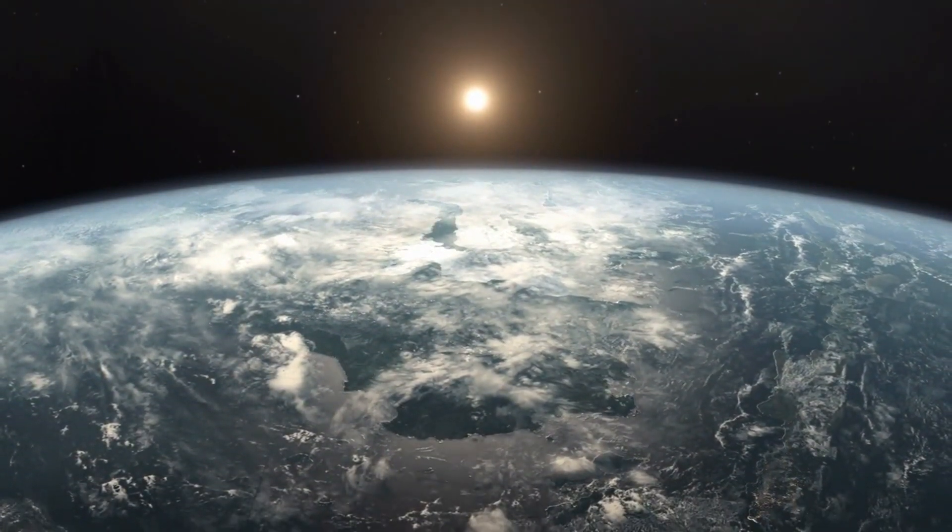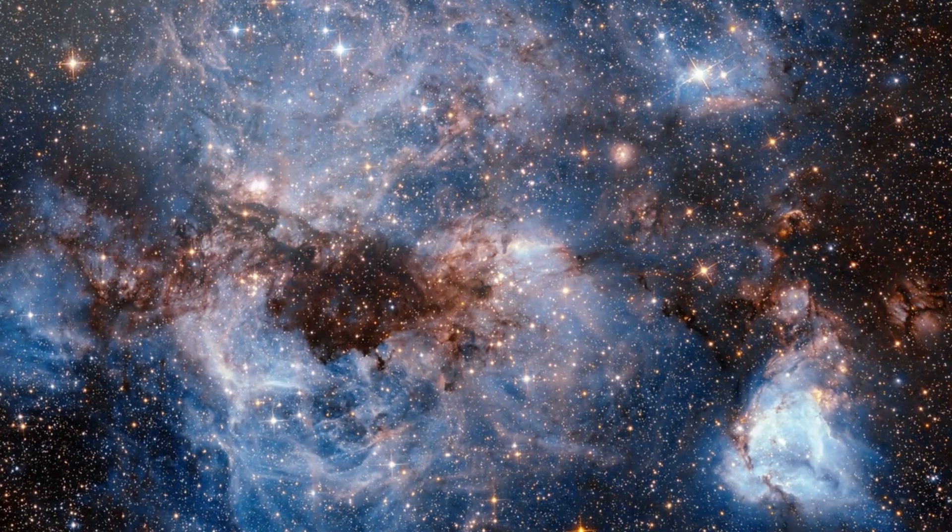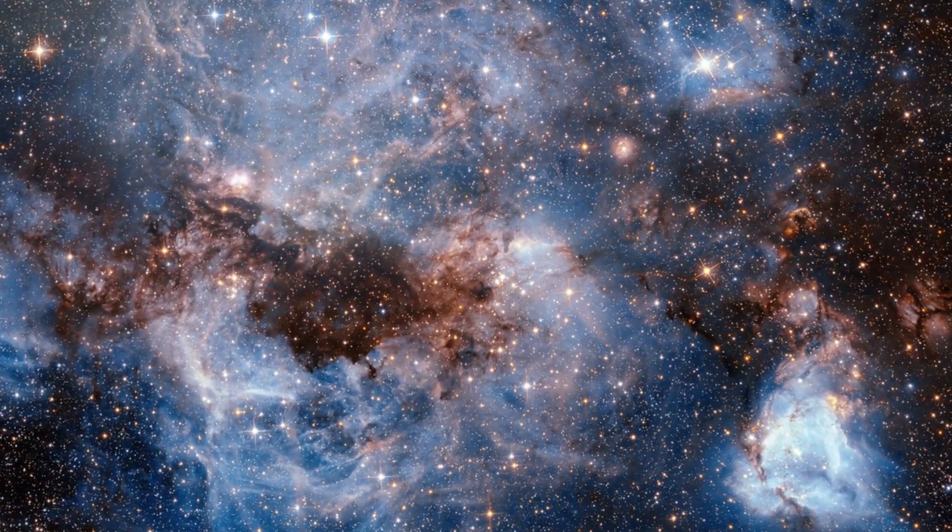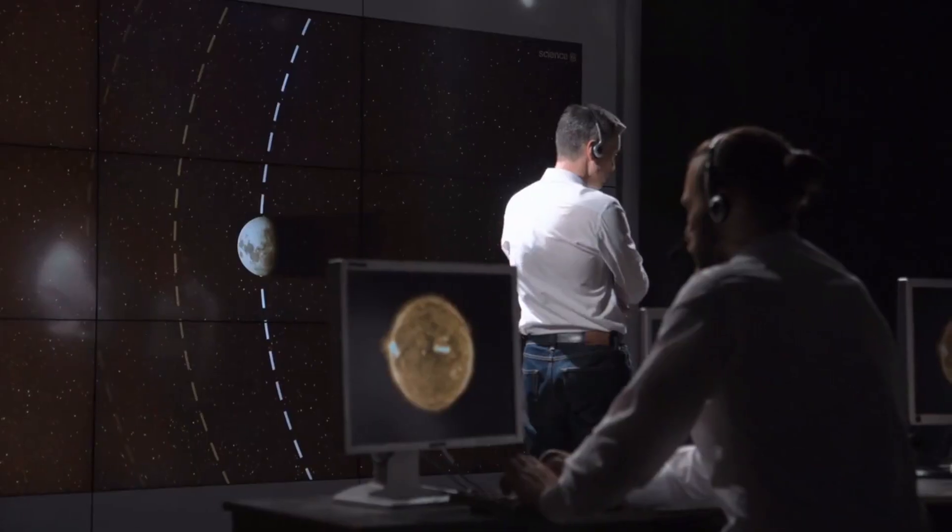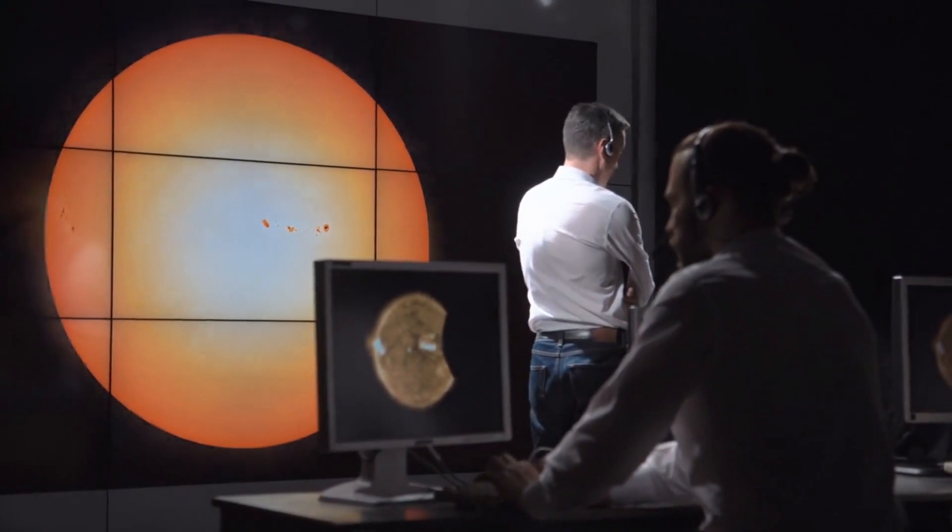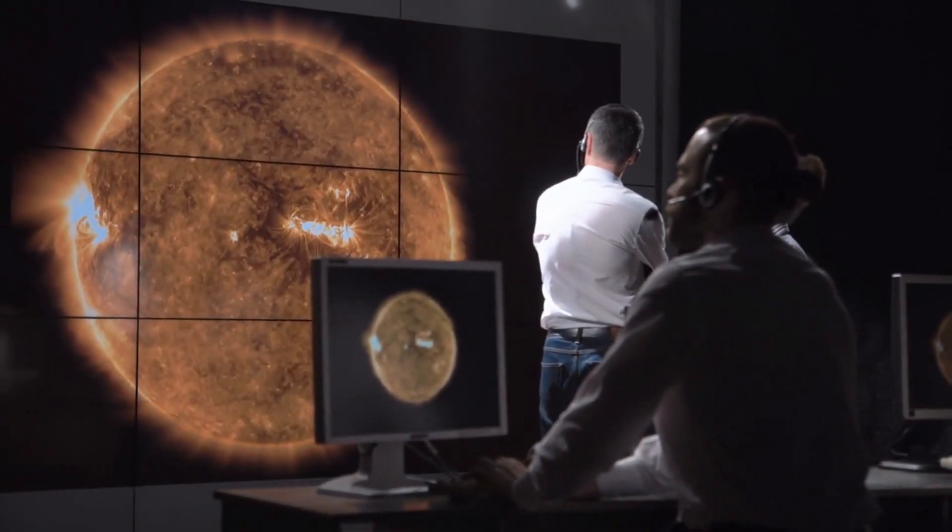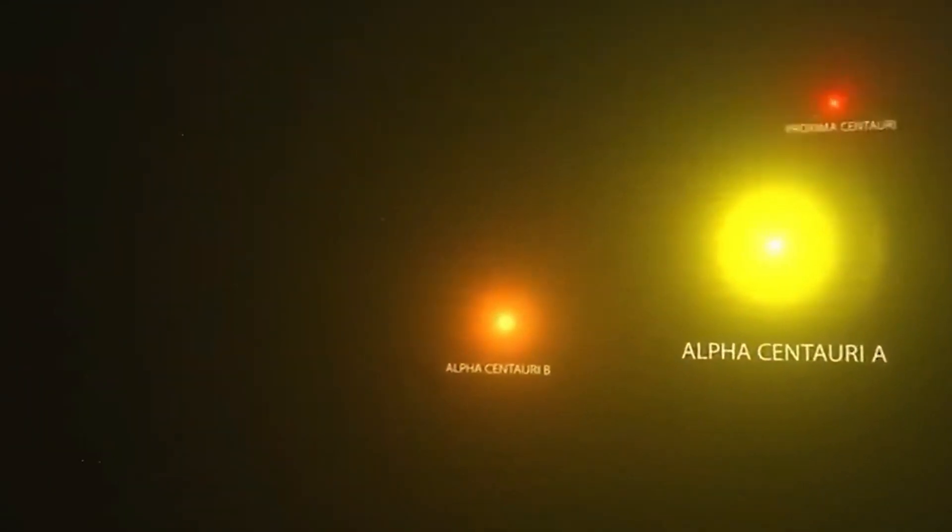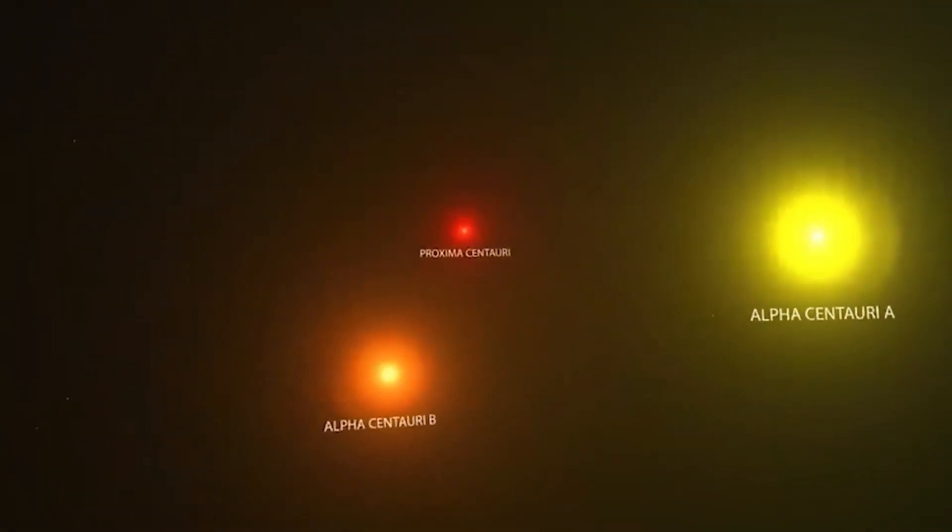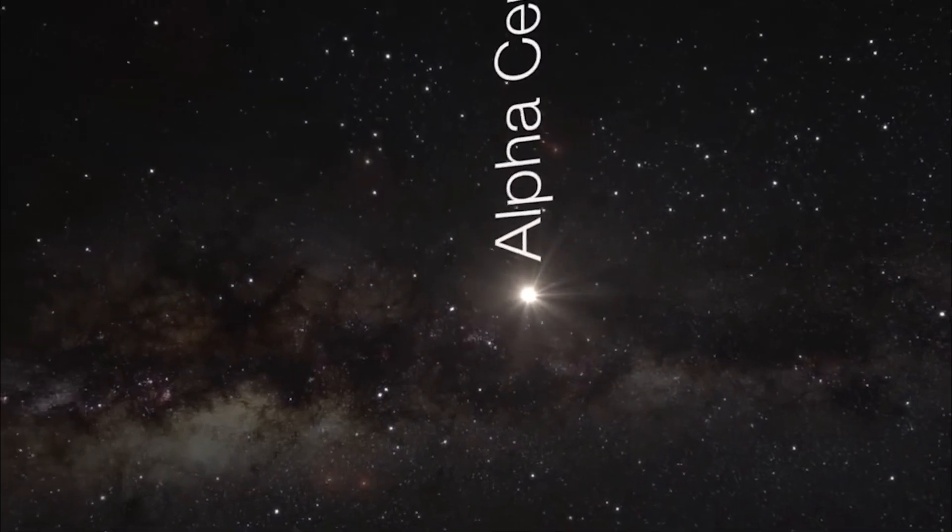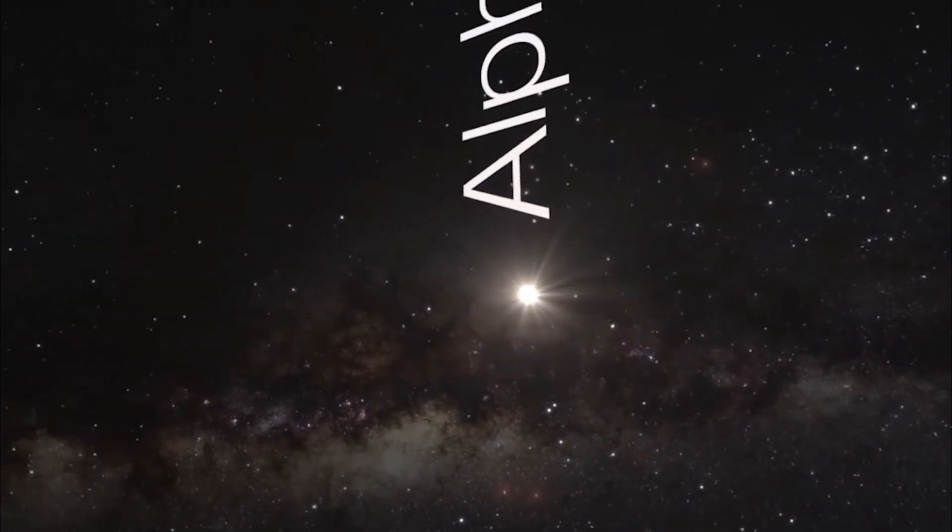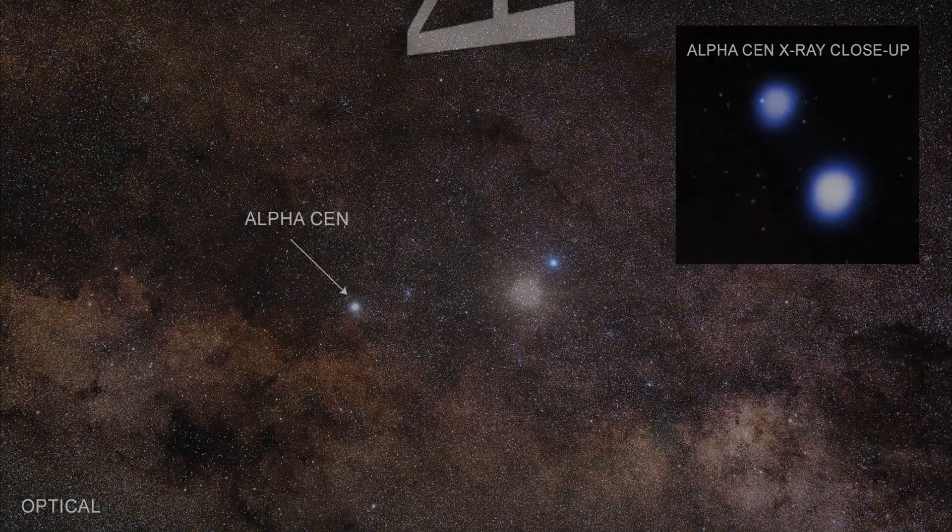One problem with searching for planets there is that both stars are bright and currently closer together because of their orbits, making detection more difficult. For Proxima B, however, the situation is different. It receives an average dose of X-rays about 500 times greater than Earth and up to 50,000 times stronger during a large solar flare. Not exactly ideal conditions for life.